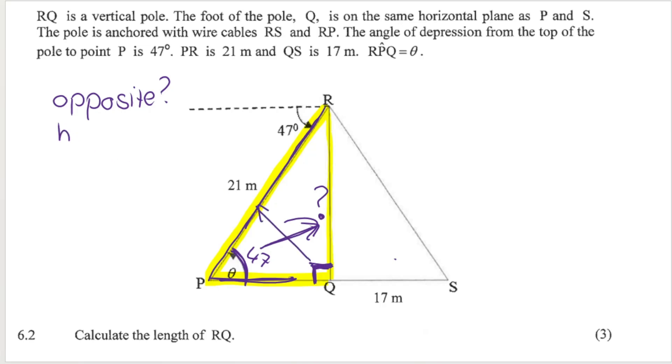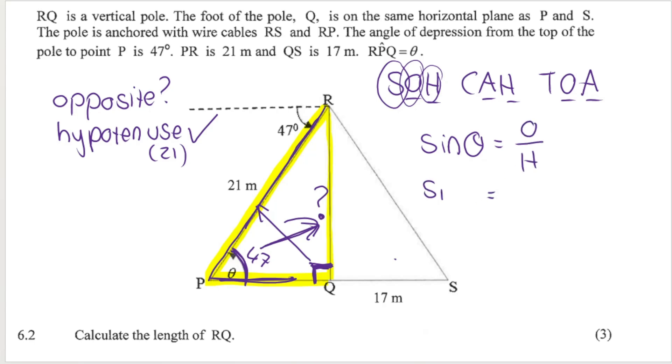That means that the 21 meters is the hypotenuse. Which trig ratio uses opposite and hypotenuse? Remember SOHCAHTOA. Sin is opposite over hypotenuse. So sin of my angle is equal to opposite over hypotenuse. My angle in this case is 47. Here's my angle over here, 47. Put it in the place of the angle.